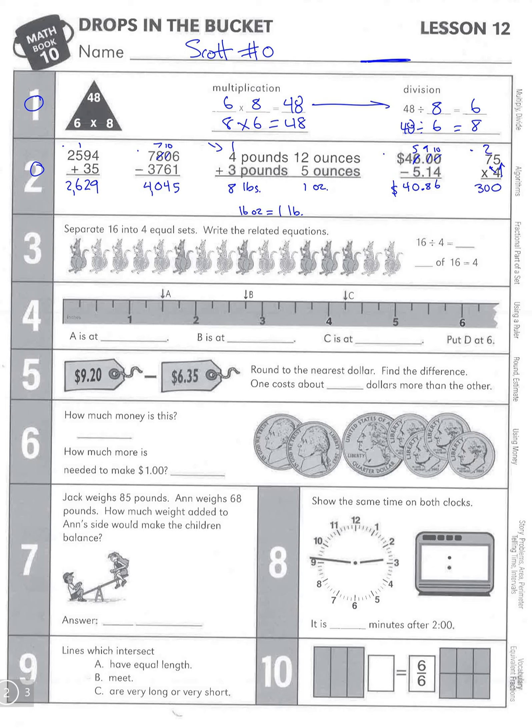Number 3: Separate 16 into 4 equal sets. I always like to jump over here and go, what times 4 is 16? And that answer is 4. So we can find 4: 1, 2, 3, 4; 1, 2, 3, 4; 1, 2, 3, 4; and 1, 2, 3, 4.